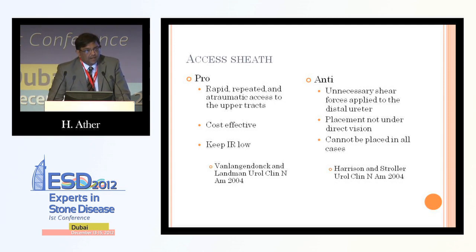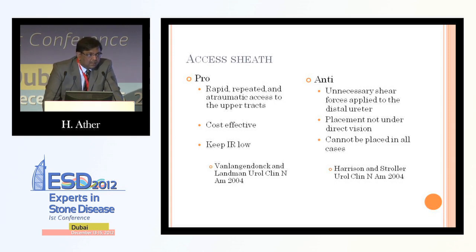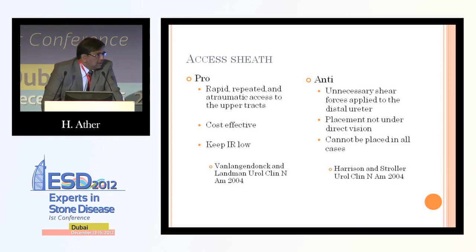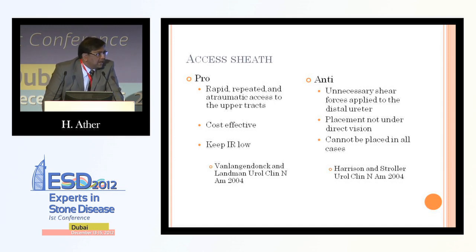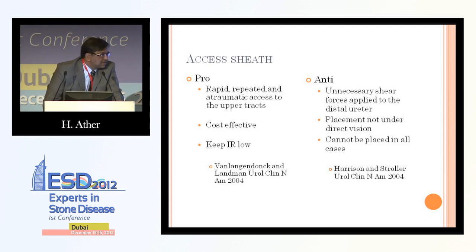Access sheath is an area of active interest. There was great enthusiasm for its use with the initial introduction of flexible ureteroscopy. The advantages are rapid, repeated, and atraumatic access to the upper tract; it is cost-effective as it significantly decreases chances of injury to the ureteroscope; and it keeps intrarenal pressure low. However, there are problems — unnecessary shear force is applied to the distal ureter, the sheath sizes (10, 12, 13, 14, 15, 16 French) are relatively large for the naïve ureter, potentially decreasing blood flow in the ureteral mucosa and causing future stricturing. Additionally, you cannot place an access sheath in all cases.